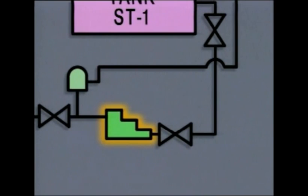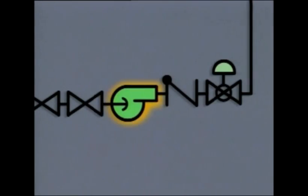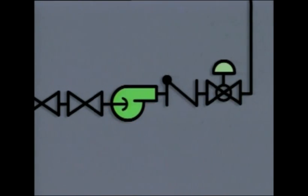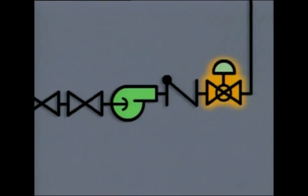This stair step symbol is used to represent a positive displacement pump. Positive displacement pumps are designed to move a specific amount of liquid on each stroke. The other pump symbol on this diagram represents a centrifugal pump. Centrifugal pumps move liquid by applying centrifugal force to the liquid. The flow rate through this centrifugal pump is controlled by a valve in the piping on the discharge side of the pump — in this case, a globe valve with a pneumatic actuator.